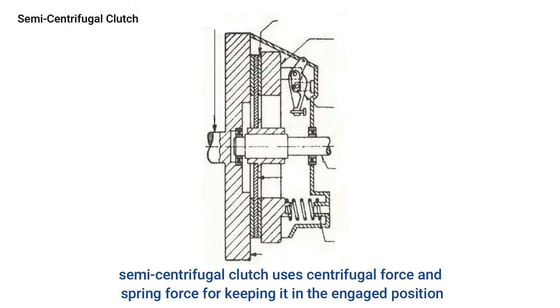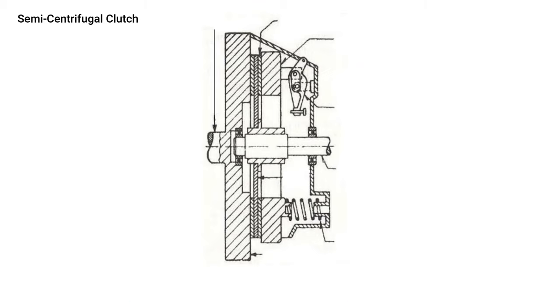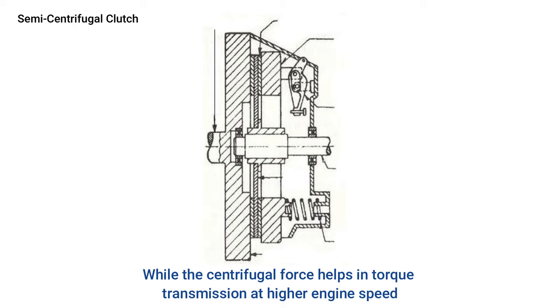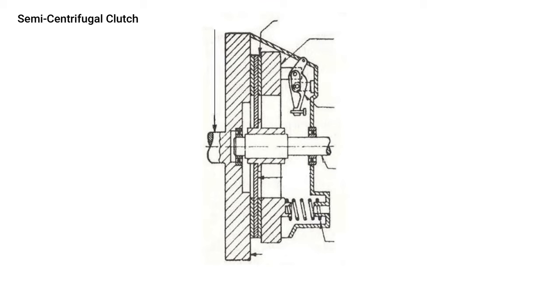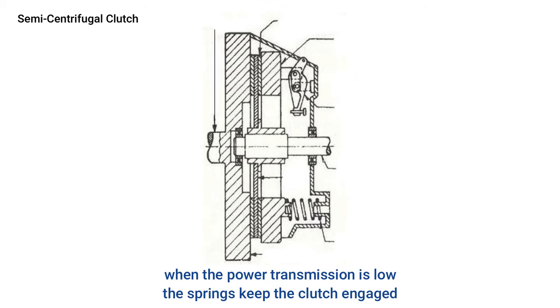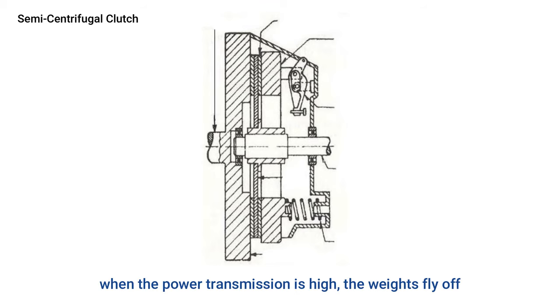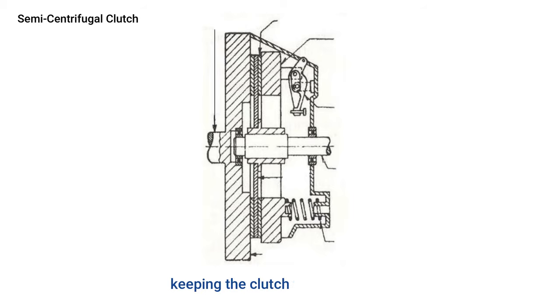The semi-centrifugal clutch uses both centrifugal force and spring force for keeping it in the engaged position. It has levers and clutch springs arranged equally on the pressure plate. The springs are designed to transmit torque at normal engine speed, while centrifugal force assists torque transmission at higher engine speeds. At normal speeds, the springs keep the clutch engaged and the weighted levers exert no pressure on the plate. At high engine speeds, the weights fly off and the levers exert additional pressure on the plate, keeping the clutch firmly engaged.